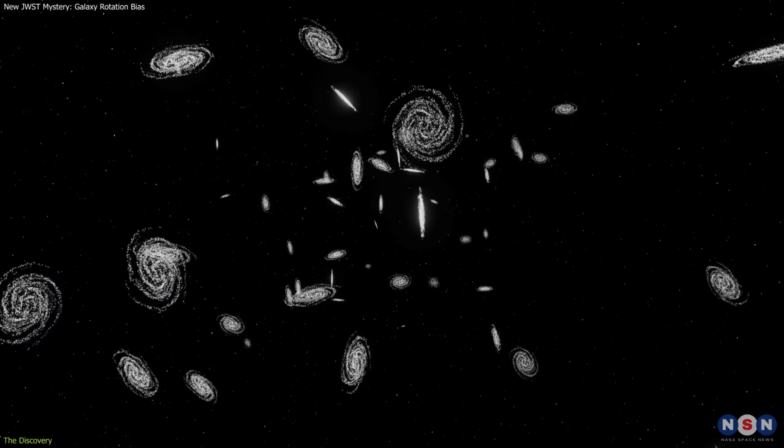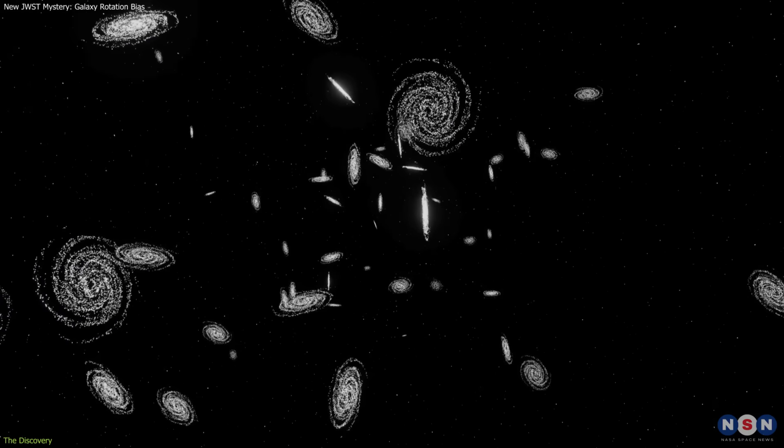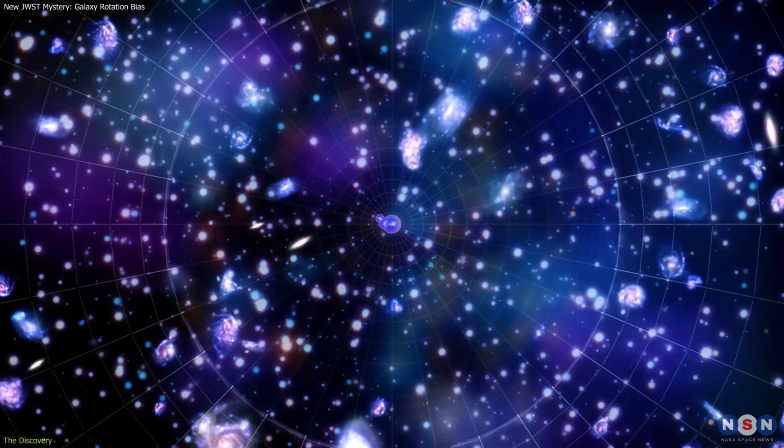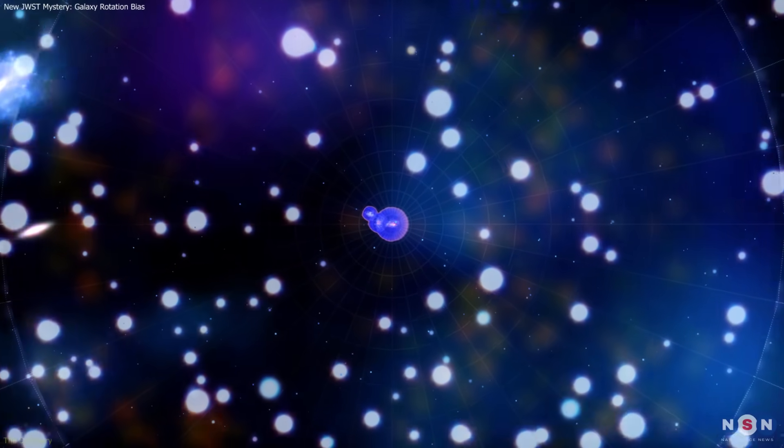The result doesn't yet prove the universe has a preferred direction. But it does raise a question that cosmologists cannot ignore. Could there be an underlying axis to the cosmos, visible in the way galaxies spun billions of years ago?